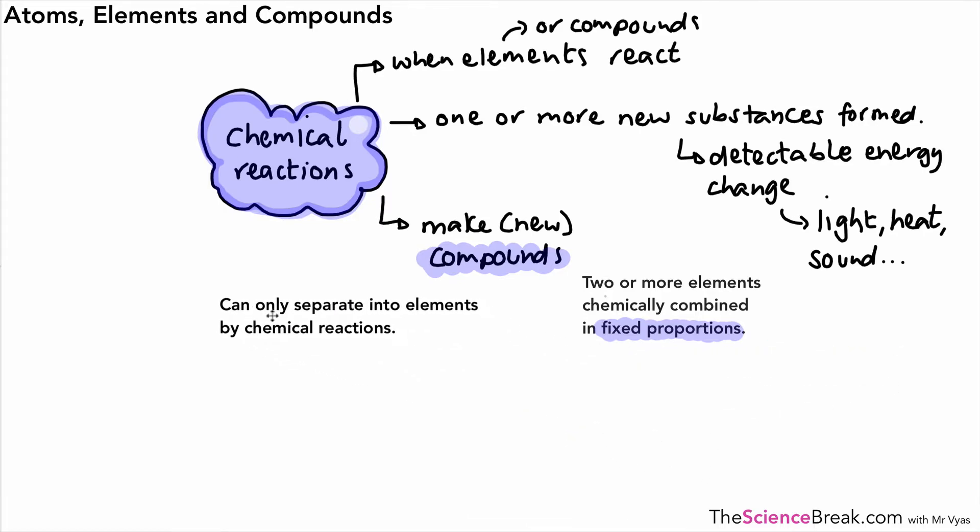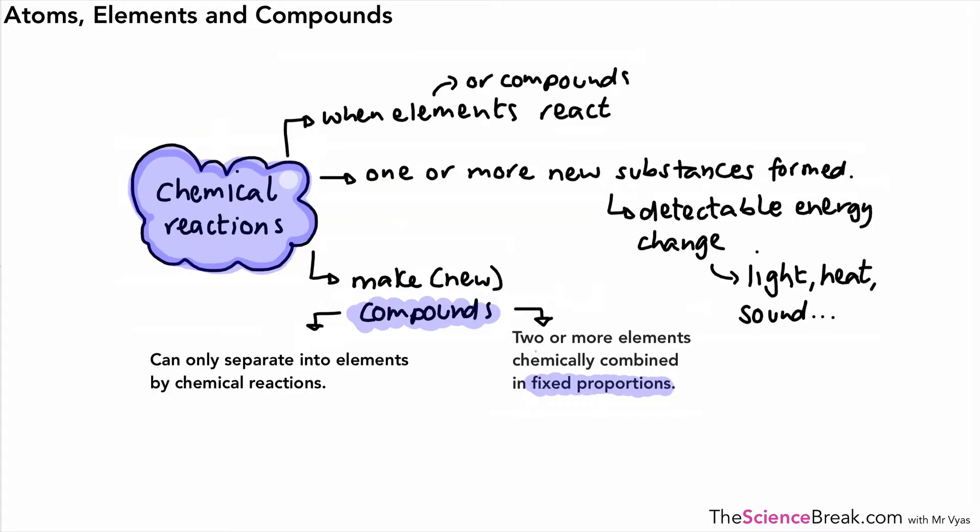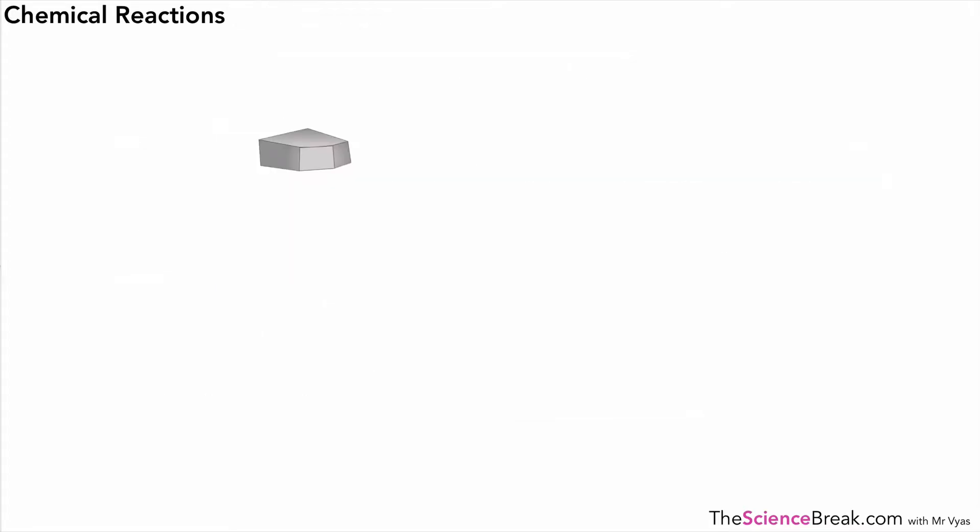The other important thing to know about compounds is that they can only be separated into elements by chemical reactions. They cannot easily be separated into elements. We're going to look at the idea of fixed proportions a bit more in a moment. Let's have a look at a couple of examples of chemical reactions.